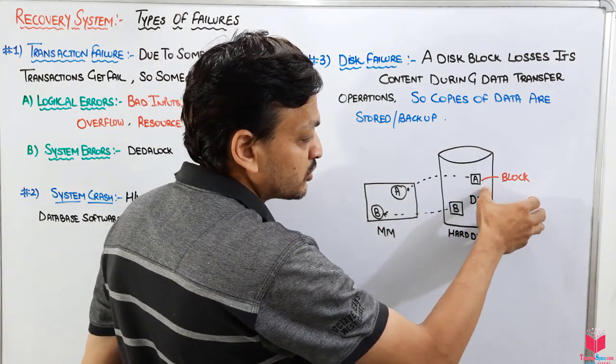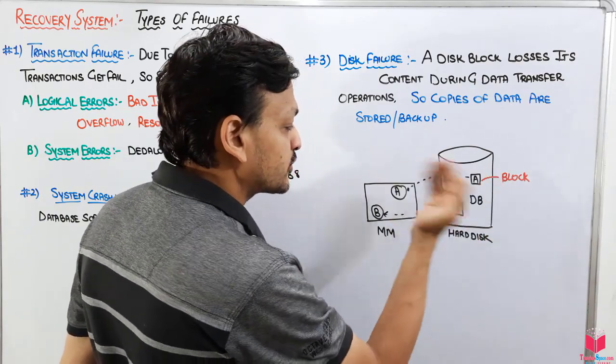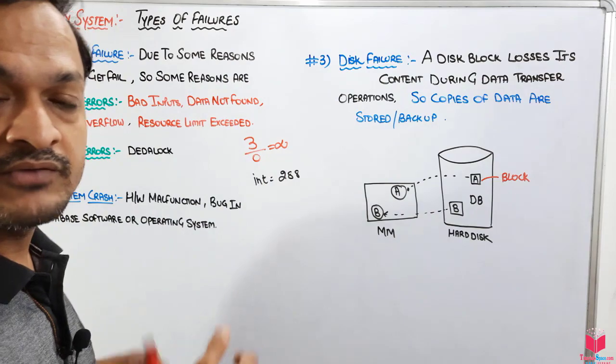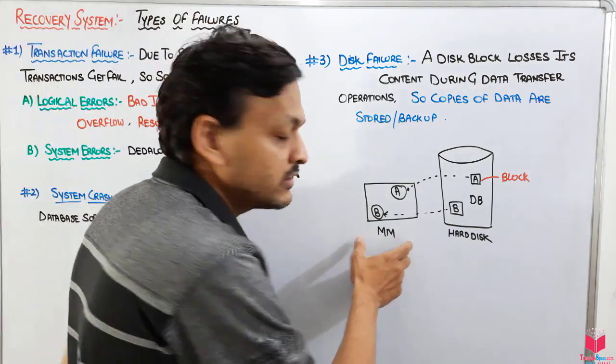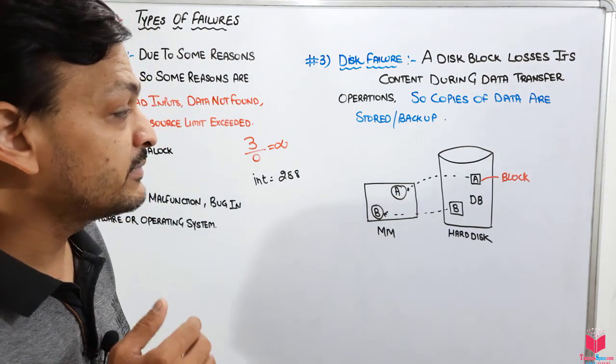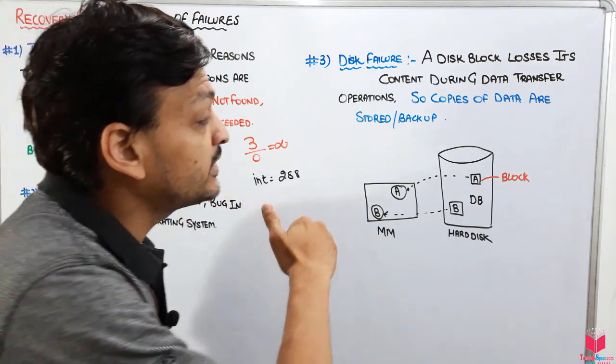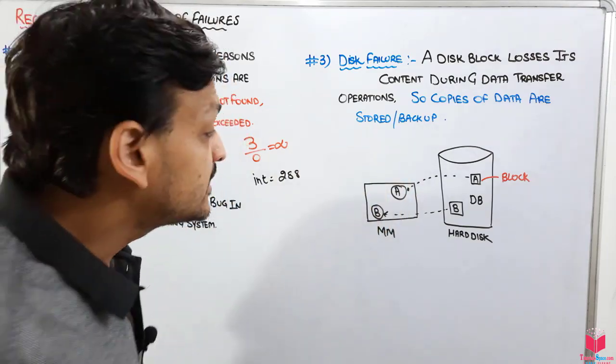So these two variables are stored in this database in this block. Then this block will transfer to the main memory and work will be done by all the transactions on these temporary variables. Then when the time comes or the commit command comes, then the actual value should be reflected back to the database.